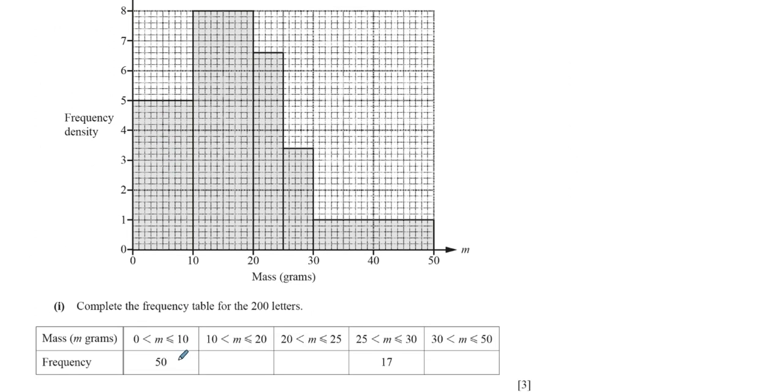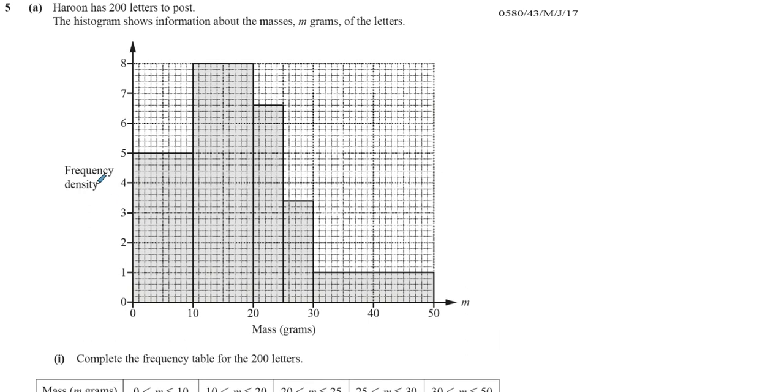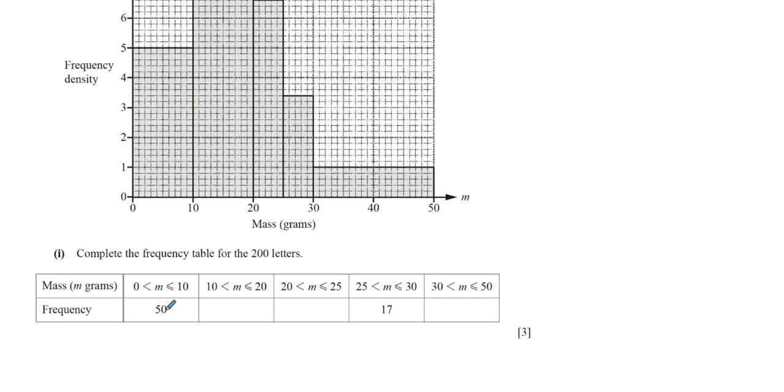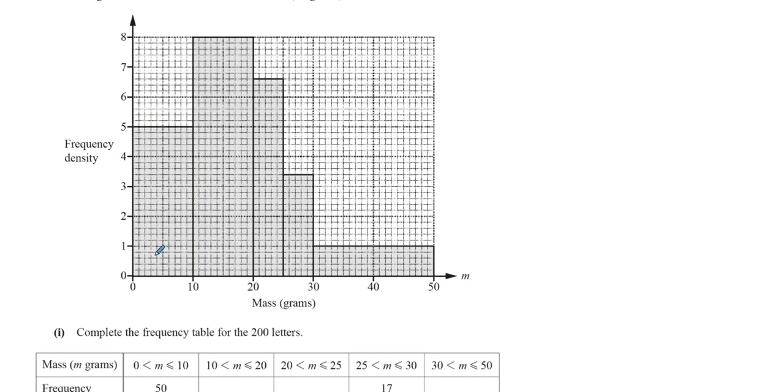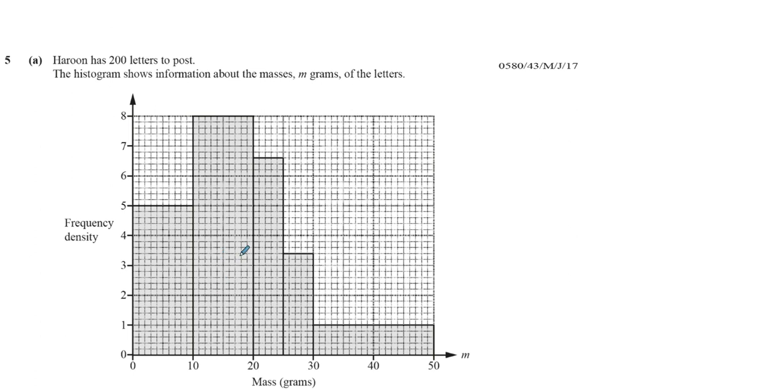We can see the frequency is 50, the frequency density is 5, and the class width is 10. So if I found the area of this bar, it's going to be 10 times 5, which is 50. So that shows us that it's the area of the bar which will tell us the frequency.